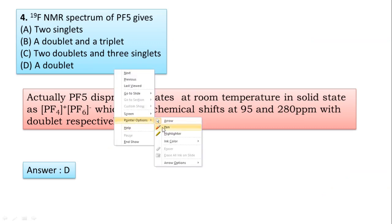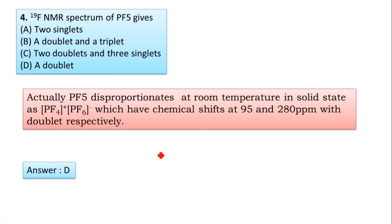Question 4: The F-19 NMR spectrum of PF5 gives two singlets, a doublet and a triplet, two doublets and three singlets, or a doublet. Actually, PF5 disproportionates at room temperature in solid state as PF4+ and PF6-. This structure gives chemical shifts at 95 and 280 ppm with doublet, so it gives a doublet. Answer D is correct.